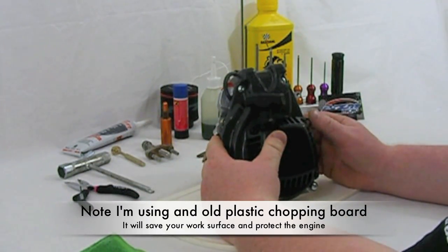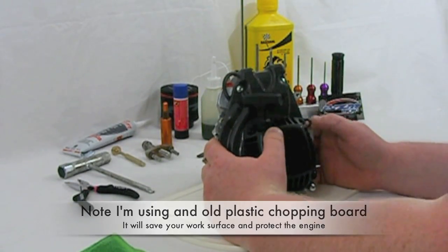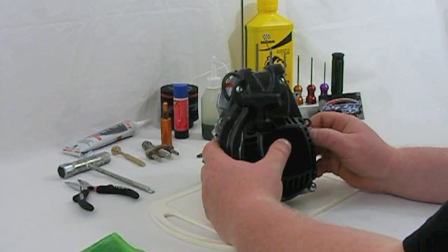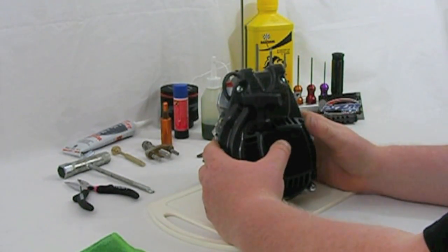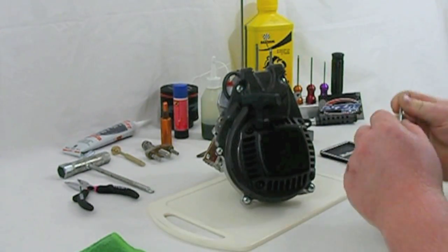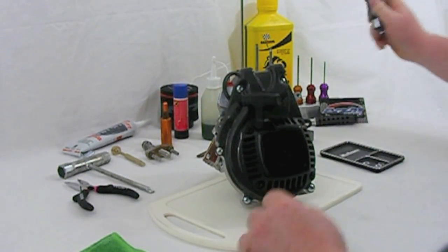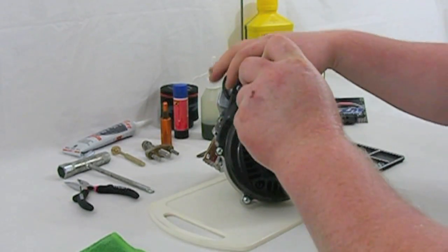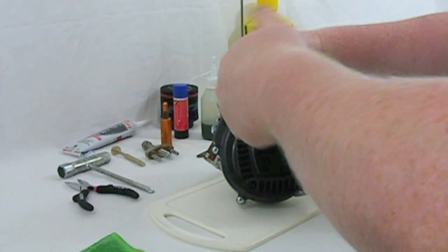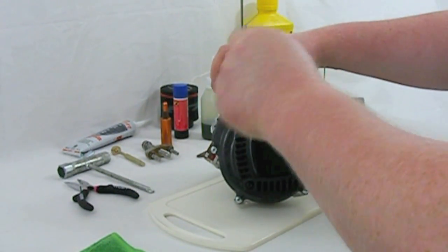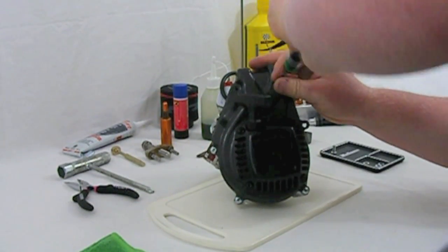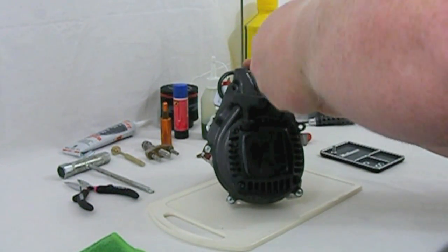Okay then. Now you have got all your tools and consumables together and hopefully you have got yourself a nice tidy work area sorted out. Let's make a start at stripping this motor down. First off we need to remove the fan cover. For this we need a 3mm driver. We need to remove the 5 pan head screws that hold the carbon fan cover on.